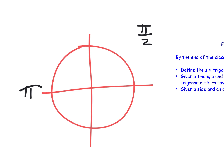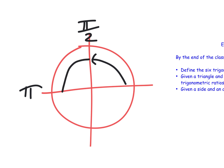Pi over two is halfway to pi. It's there. Half means you go halfway there, and that's half of the way to pi. And then this is pi, but I don't think you should call it pi in this context. I think you should call it two pi over two.